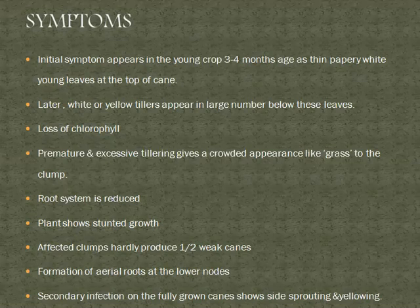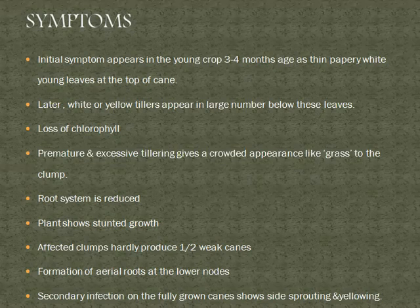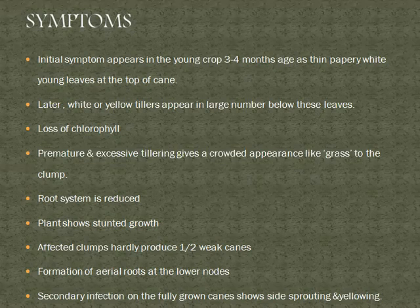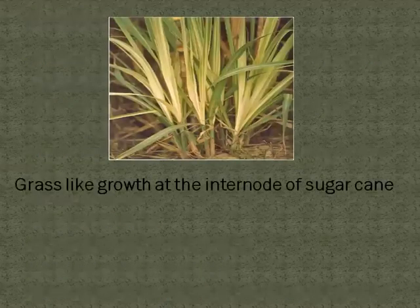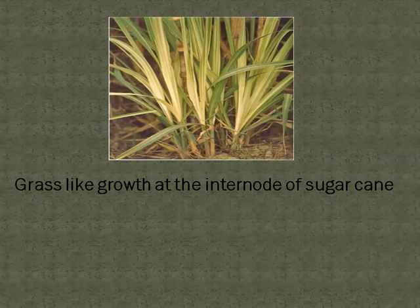The root system is reduced and plants show stunted growth. Stunted growth is one of the common symptoms for identification of phytoplasma disease. Affected clumps hardly produce canes. Formation of aerial roots at the lower nodes also takes place. Secondary infection has been observed on fully grown canes, which show side sprouting, yellowing symptoms, and grass-like growth at the internodes. The entire plant shows stunted growth and loss of chlorophyll.